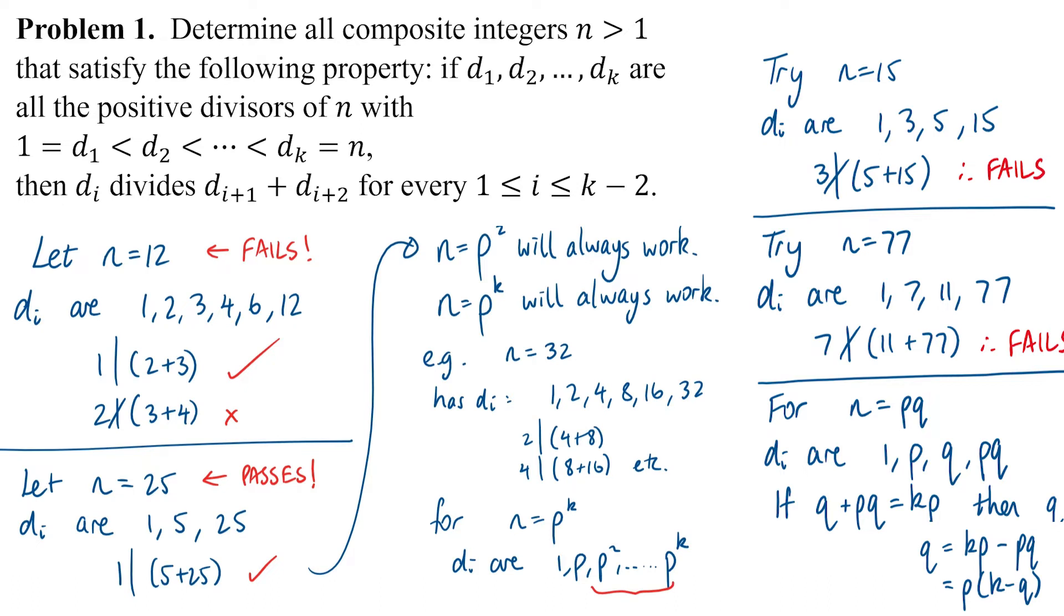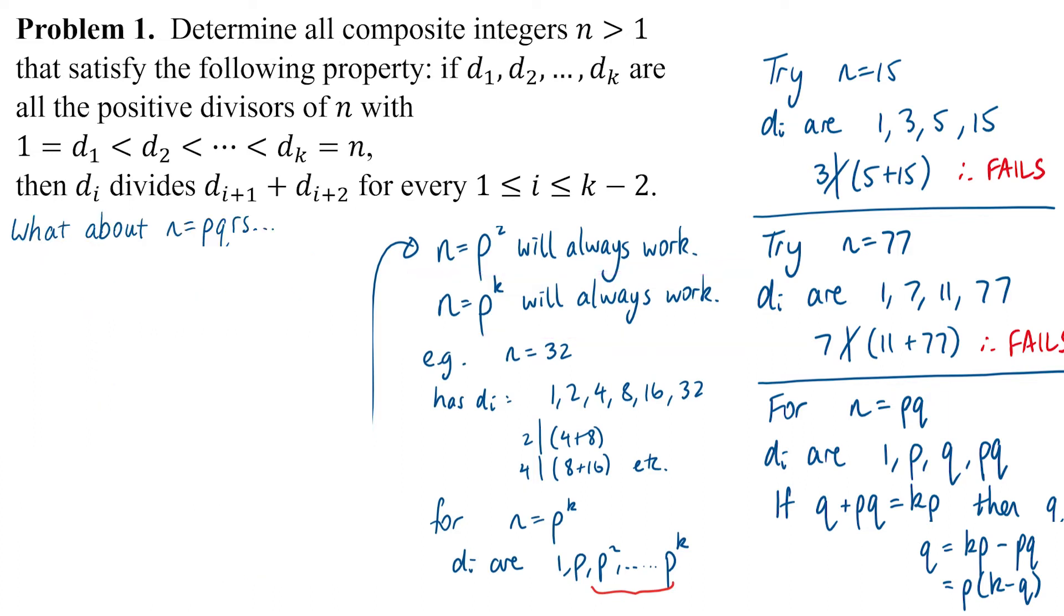We've ruled out numbers of that form pq that have exactly 2 prime factors. We're probably getting confident that those prime powers we identified are in fact the only solutions. But we still need to rule out all other numbers. We haven't ruled out numbers that have more different prime factors like p, q, r, s, or numbers that have repeated prime factors.